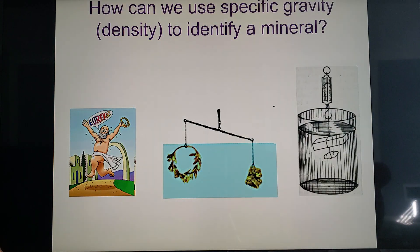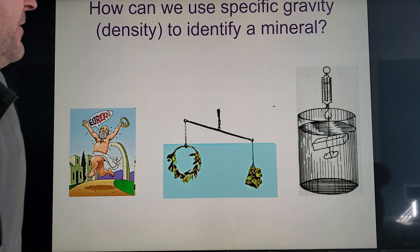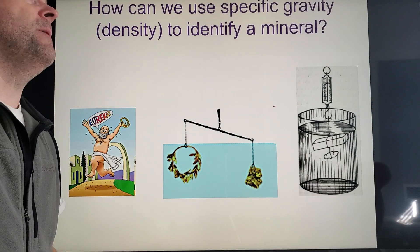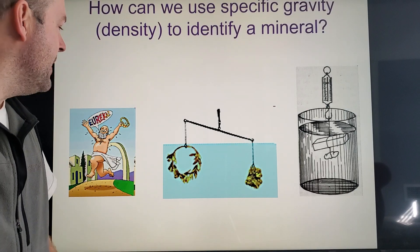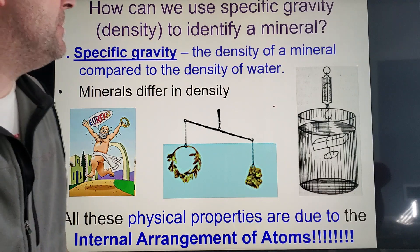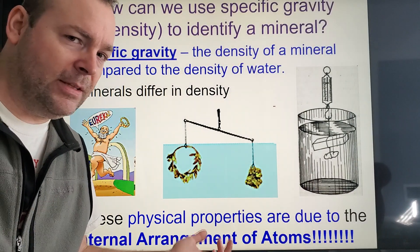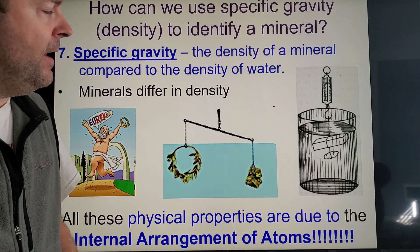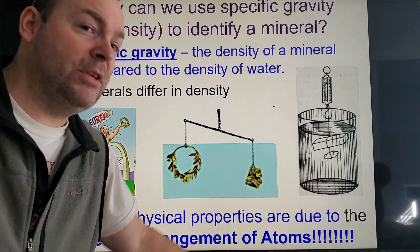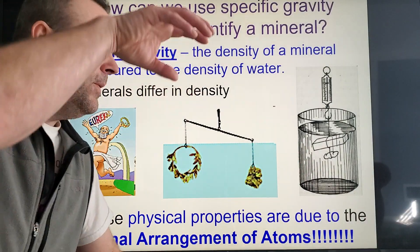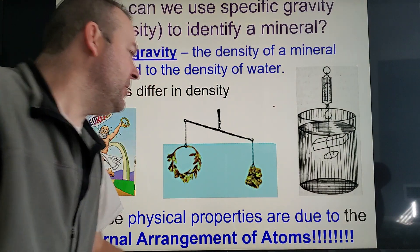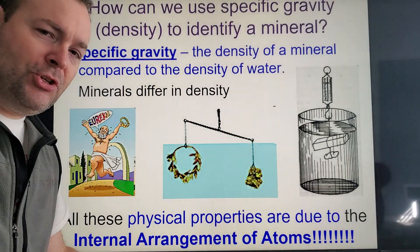Specific gravity is similar to density — every mineral has a pretty unique density, which can also help identify it. To find the density of irregularly shaped objects, you can't use a ruler for volume. Instead, you put the object in water using the displacement method: the amount of water that rises is the volume of the object. The gentleman who figured this out was a Greek mathematician named Archimedes.